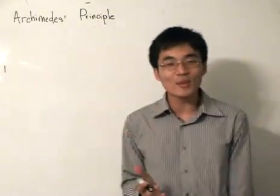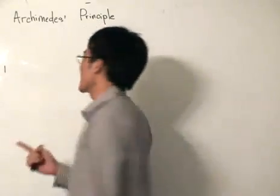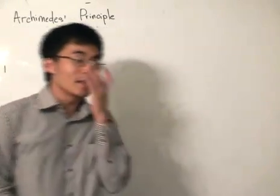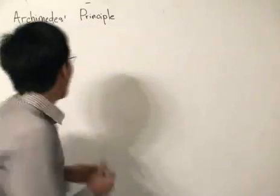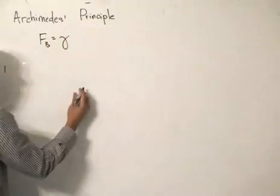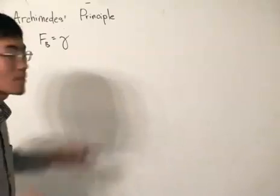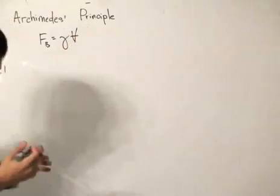I'm sure in your high school physics course you already learned what Archimedes principle is. Basically, what it says is that as we submerge an object inside a fluid, the object will experience an upward force. That force, otherwise known as the buoyancy force, will be given by the specific gravity or the density times gravity, multiplied by the volume of the liquid displaced.